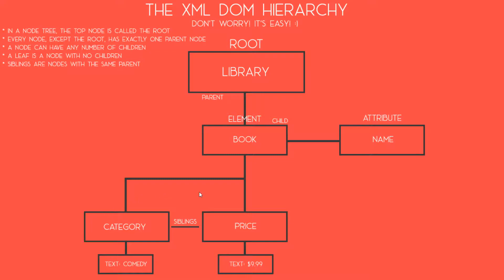This is a recurring pattern and it doesn't get much harder than this. Just like the book element, these two elements have attributes too. The category element has a text attribute with the value of comedy, and the price element has a text attribute with the value of $9.99. And since HTML is a markup language just like XML, pretty much every website on the internet is structured the same way as we've just seen.